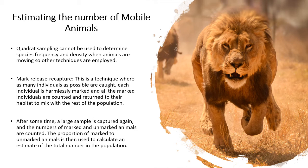Mark release recapture is a technique where you catch as many individuals of that species as possible and you mark them harmlessly. You need to make sure that the mark is very evident, but it is also harmless to the organism — it doesn't kill the animal, but also it has to be something that doesn't make it easily seen by predators. Once you've done that, you count all the marked individuals and return them to their habitat to mix with the rest of the population. After some time, you go back again, you catch a large sample, and in that large sample you then count the number of marked and unmarked animals.